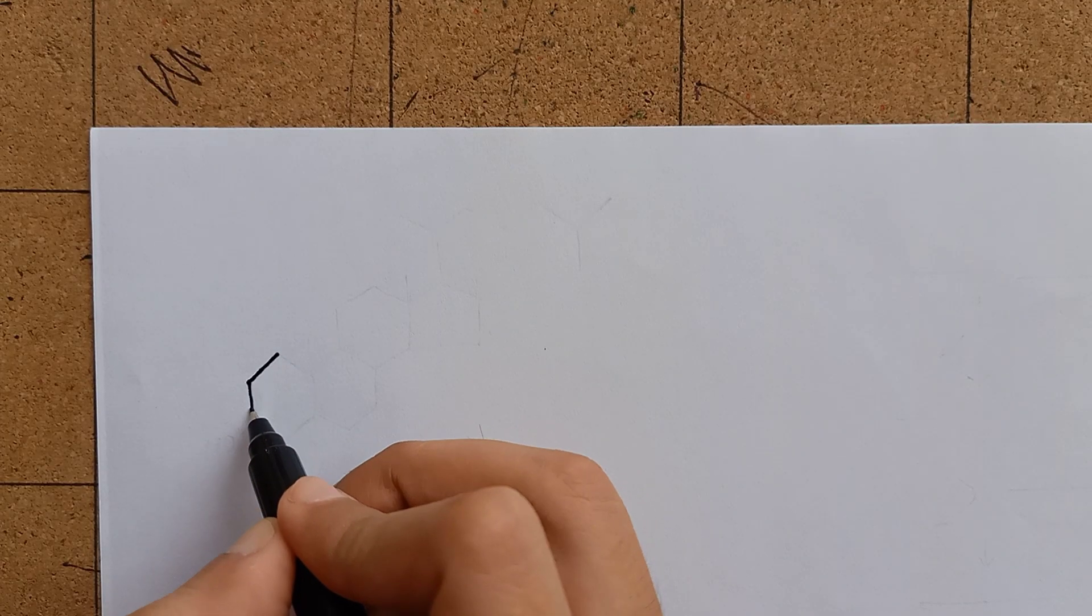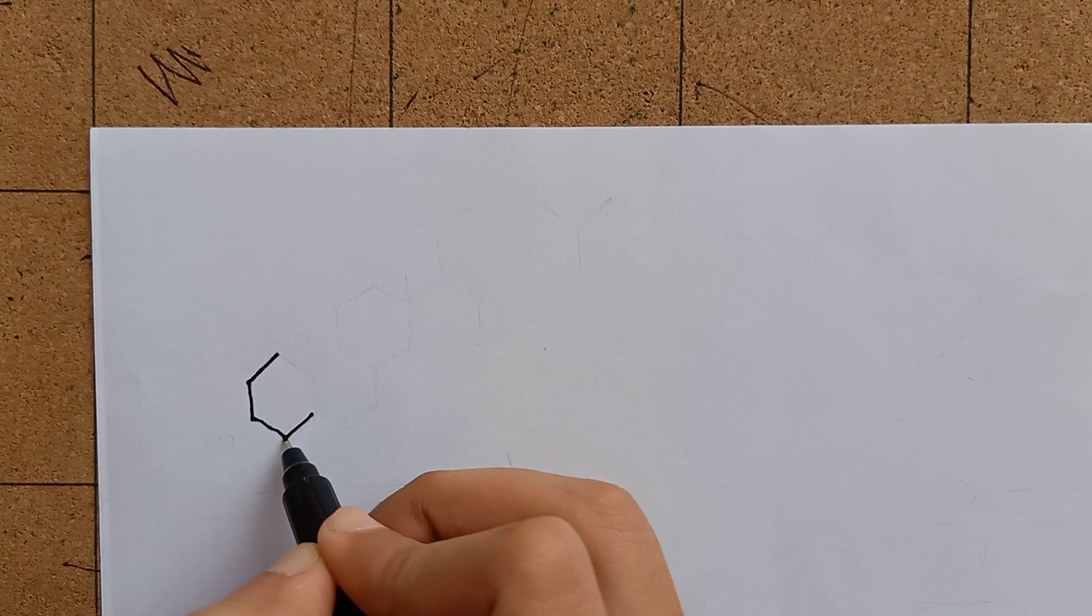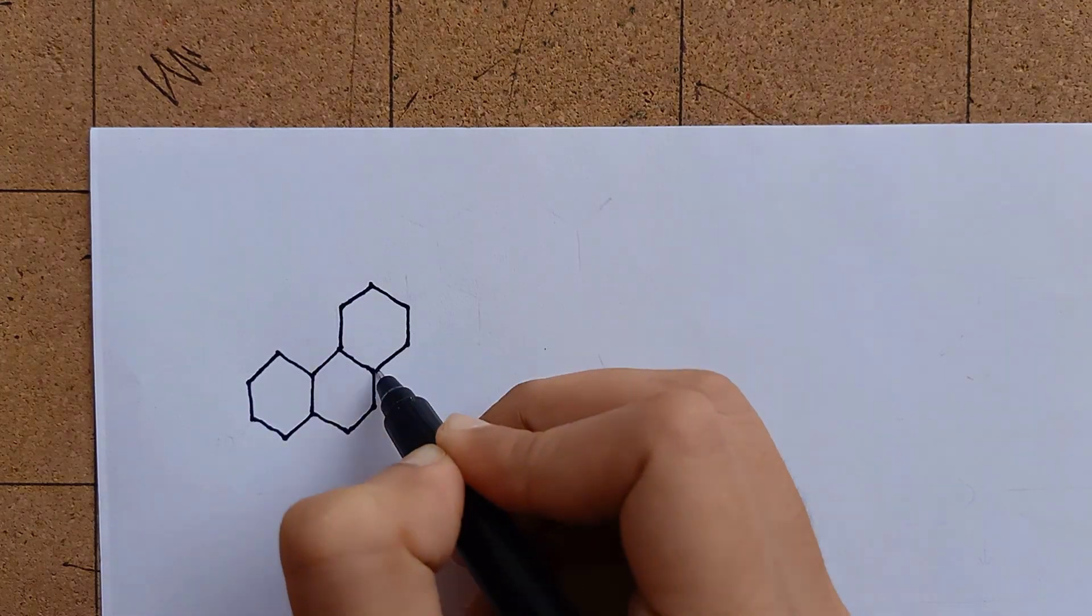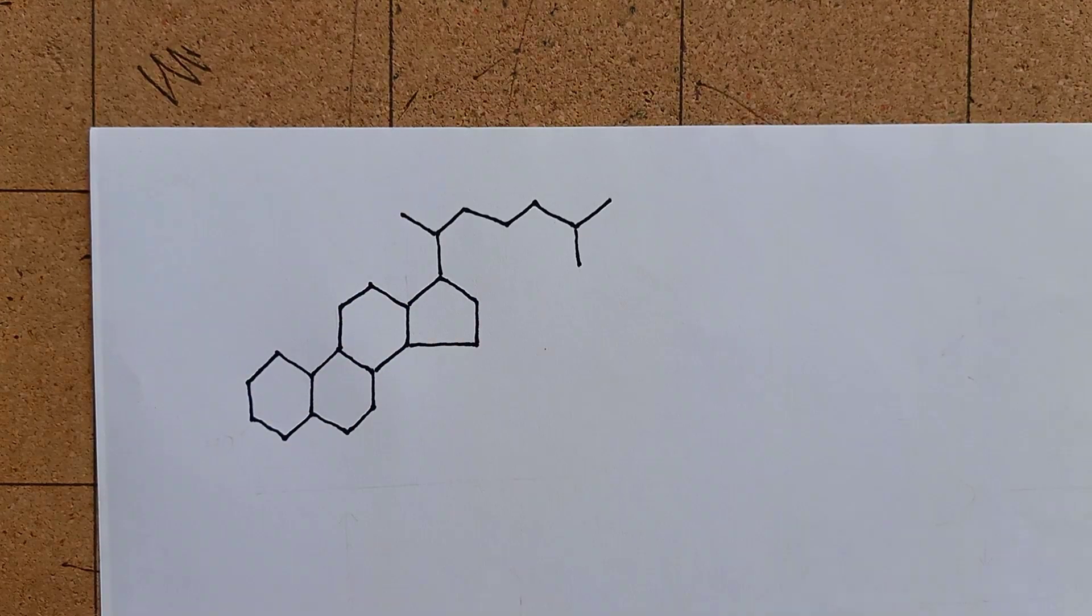In this video, we are going to learn the synthesis of cholesterol in detail. The structure of cholesterol consists of 27 carbons.